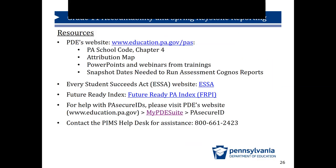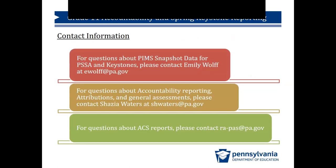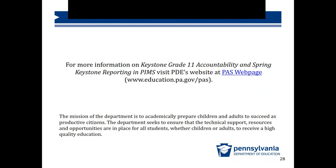These are some of the resources available to you. On the PDE website, you can find information on Chapter 4, the attribution map, and additional trainings. A list of contacts is provided if you have questions or need clarification. For more information on Keystone Grade 11 accountability and Spring Keystone reporting in PIMS, visit PDE's website at education.pa.gov. Thank you.